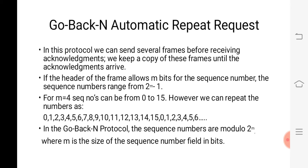If the header of the frame allows m bits for the sequence number, the sequence numbers range from 0 to 2^m minus 1. So if m is equal to 4 — if we are taking 4 bits for sequence number — then it can range from 0 to 15. We can repeat the sequence number: 0, 1, 2, up to 15, and then again repeat from 0, 1, 2, and so on. In Go-Back-N protocol, the sequence numbers are modulo 2^m, where m is the size of the sequence number field in bits.